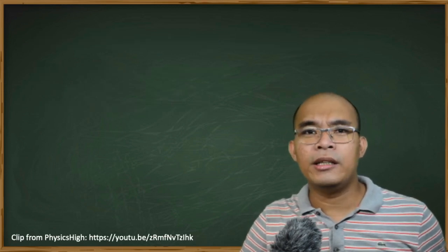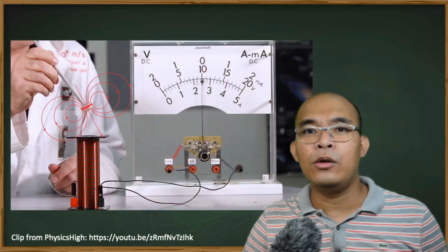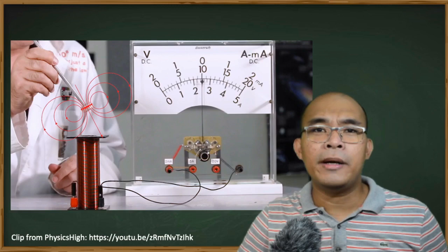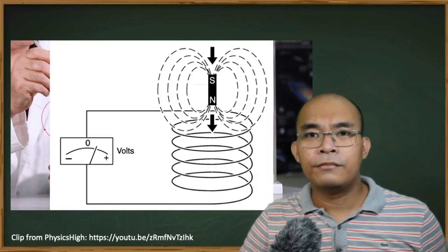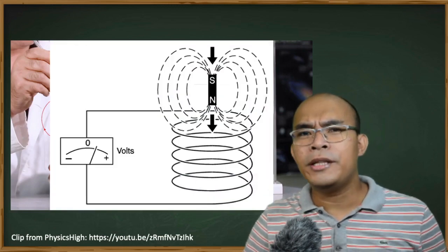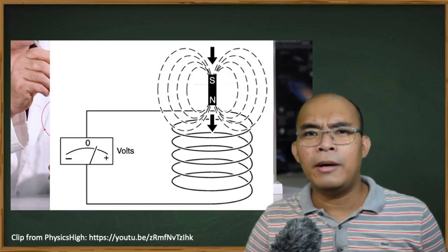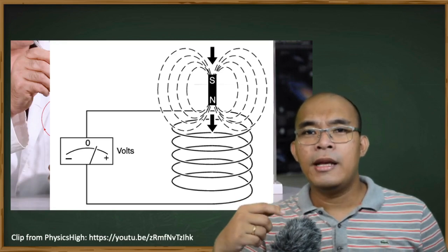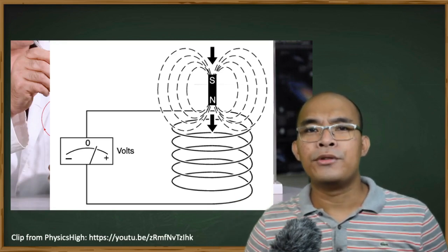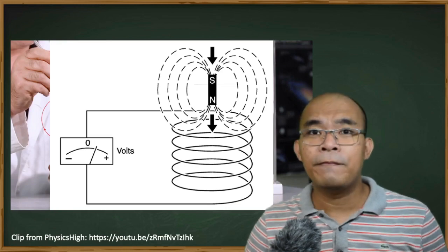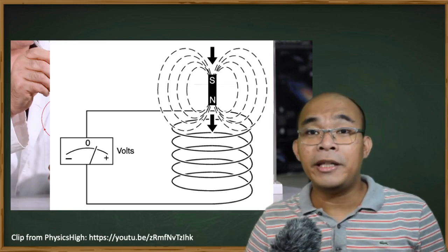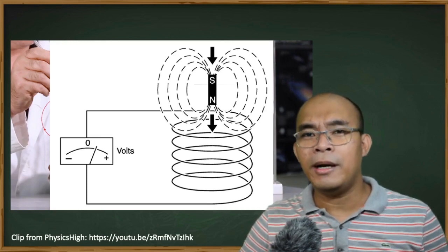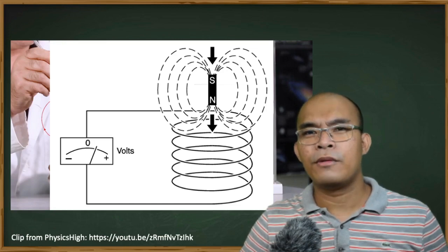To illustrate this principle, let us take a look at an experiment clip from Physics High. The diagram for this experiment shows three components: the galvanometer, which measures small amounts of voltage or current; the conductor in the form of a coil; and the magnet. The broken lines around the magnet represent the magnetic field — the invisible area around a magnet in which there is a magnetic force.